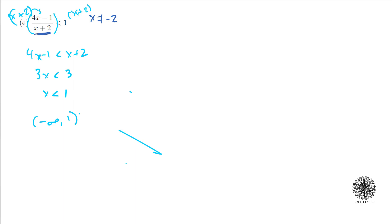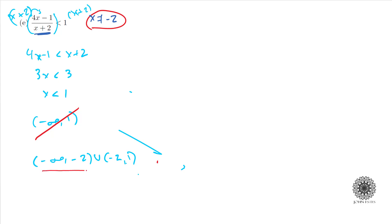So my solution would be negative infinity to 1, but we have to account for the restriction that x can't be negative 2. To adjust for that, I cut out negative 2 from the interval. This means I can take anything up to negative 2 but not including it, and then anything after negative 2 up until 1, also not including negative 2. I hope this makes sense. Inequalities show up a good bit and are extremely useful, so if you have any questions let me know — thanks for watching.